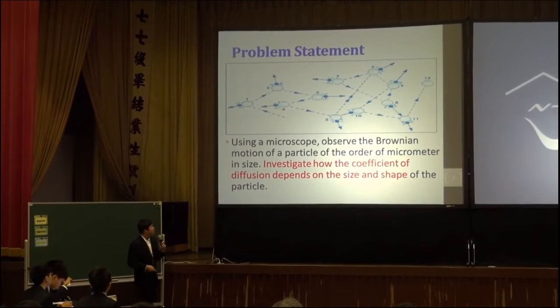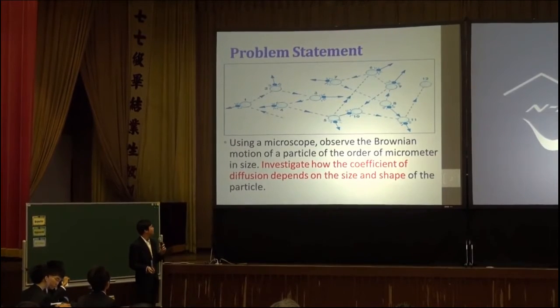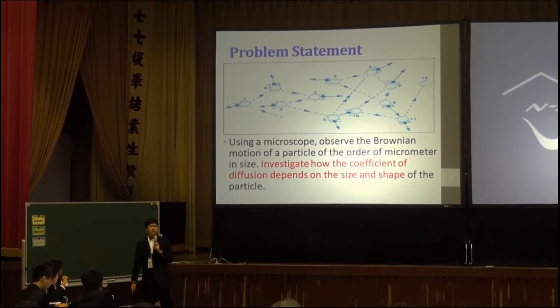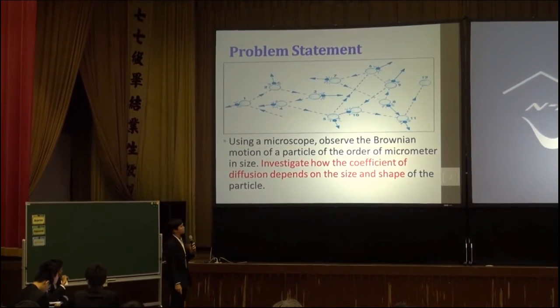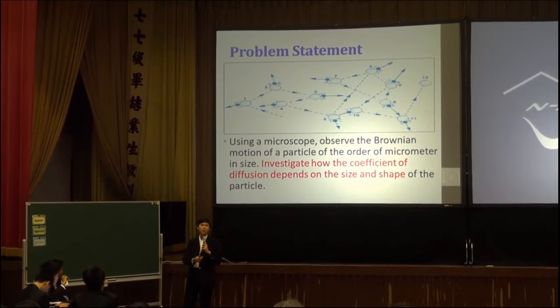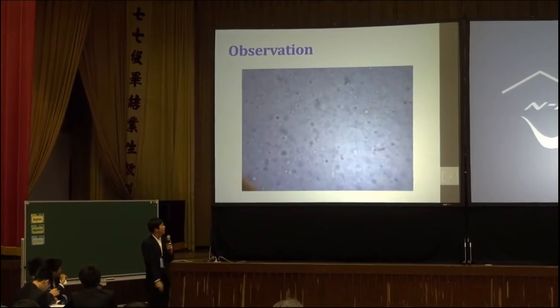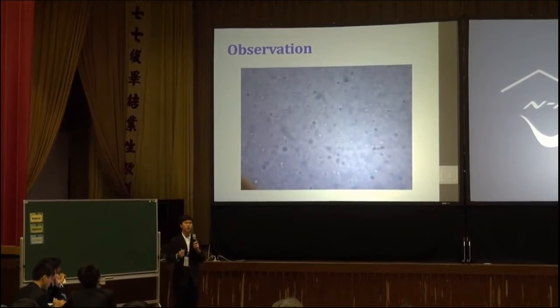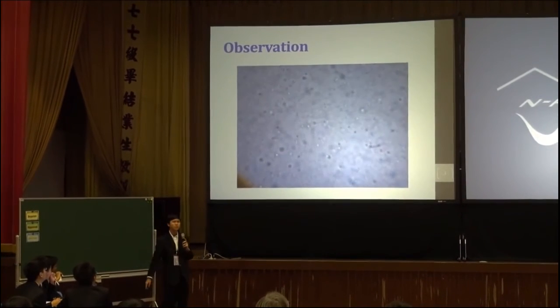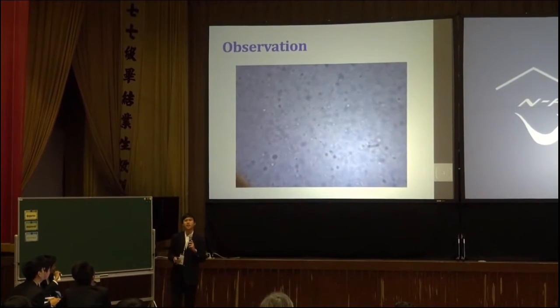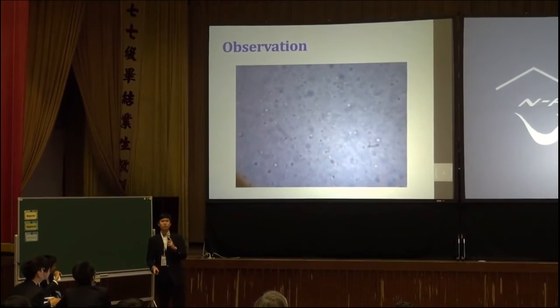Let's look at the problem segment. It says that using a microscope, observe the random motion of a particle of the order of a micrometer in size, investigate how the coefficient of diffusion depends on the size and shape of the particle. Now let's begin with our observation. In our observation, we use the milk as our diffusion particles. As you can see in this observation that these milk fat particles seems to walk around randomly, that it's seemingly chaotic motion.